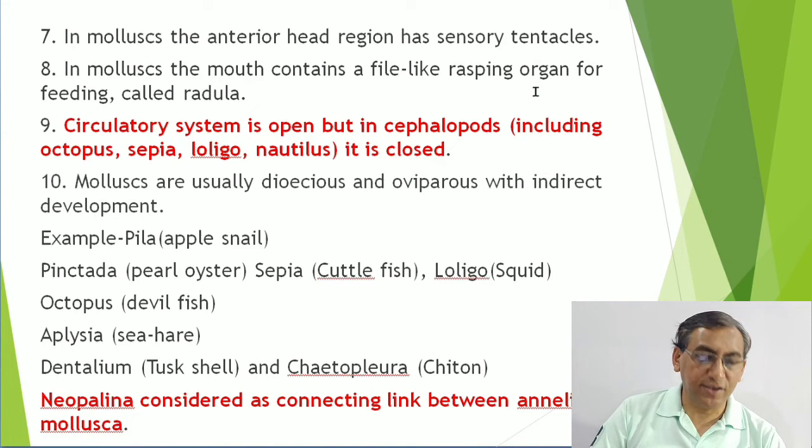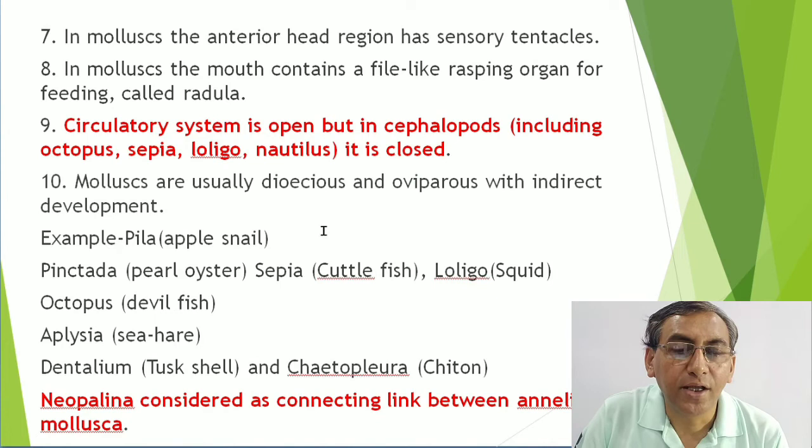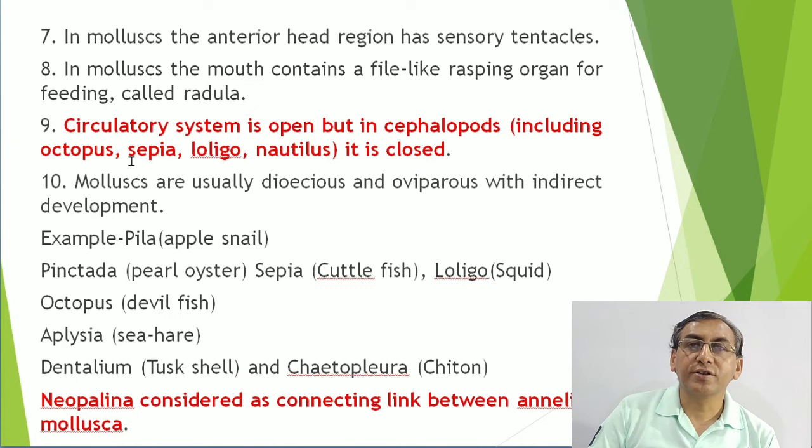The circulatory system in Mollusca is open, with the exception of Cephalopoda - the most advanced molluscs - which have a closed circulatory system. Examples of Cephalopoda: Octopus, Sepia, Loligo, and Nautilus. Mollusca are mostly dioecious, oviparous, and with indirect development.